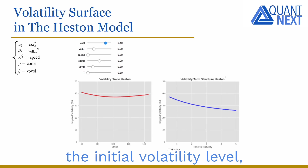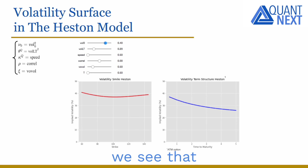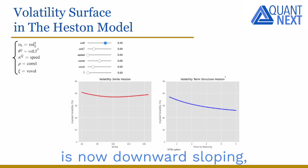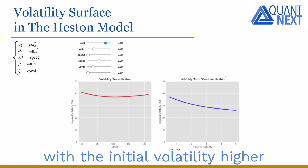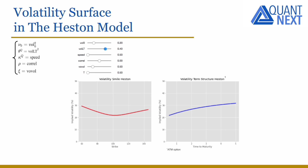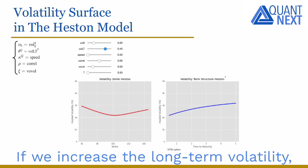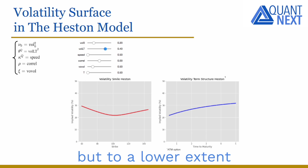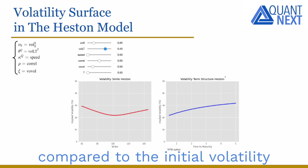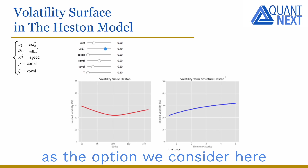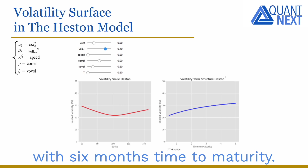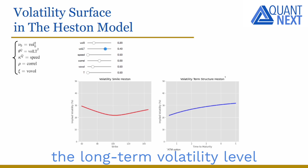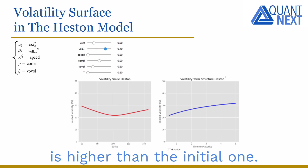If we increase the initial volatility level, the implied volatility level increases while the volatility term structure becomes downward sloping, with the initial volatility higher than the long-term one. If we increase the long-term volatility, it also increases the volatility level on the smile, but to a lower extent compared to the initial volatility since the option considered here is short-term with six months to maturity. The volatility term structure is this time upward sloping, as the long-term volatility level is higher than the initial one.